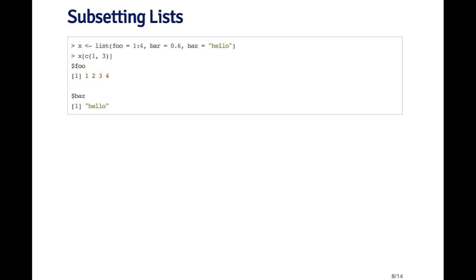If you want to extract multiple elements of a list, you need to use the single bracket operator. For example, if I want the first and the third element — which are the foo and the baz elements — I can pass a numeric vector c(1, 3) to x using the single bracket operator. That returns a list with the elements foo and baz. You cannot use the double bracket or the dollar sign operators when you want to extract multiple elements of a list.